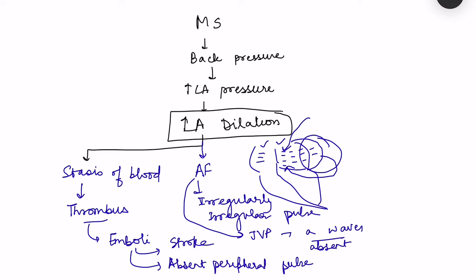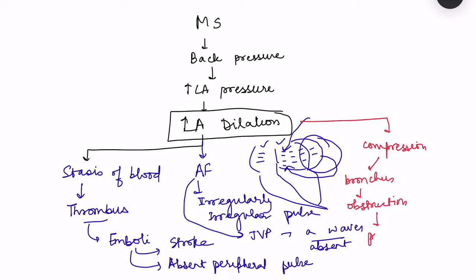The third thing which can happen with left atrial dilation is compression of surrounding structures. The left bronchus can be compressed, leading to obstruction and increased chances of pneumonia and respiratory infections. There can also be obstruction of the esophagus causing dysphagia, and obstruction of the recurrent laryngeal nerve leading to hoarseness of voice.